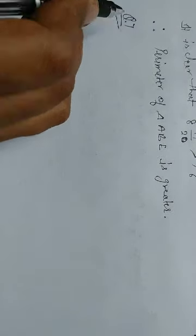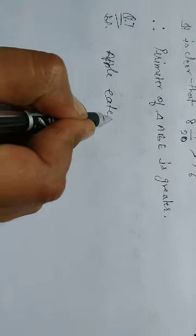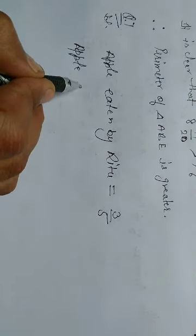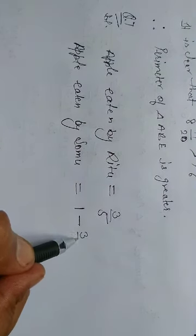Next question. Question number 7. Ritu eats 3/5 part of an apple and the remaining apple was eaten by her brother Somu. How much part of the apple did Somu eat? Who had the larger share and by how much? This is equal to 3/5, and the apple eaten by Somu is...